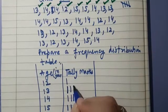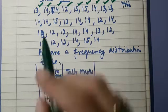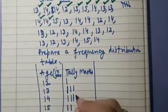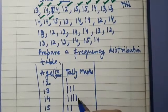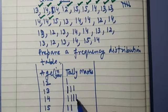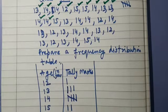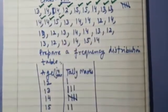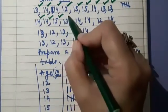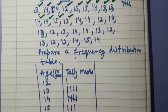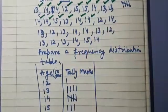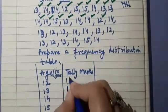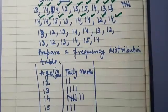Then we have two 13s, so we mark two vertical lines in front of 13. Then two 14s — marking one line in front of 14 makes four, so we need one more to make a bundle of 5, so we draw a diagonal line. We have covered up to 14. Next is 15 — one line; then 13 — one more line in front of 13; then two 14s — two vertical lines in front of 14.